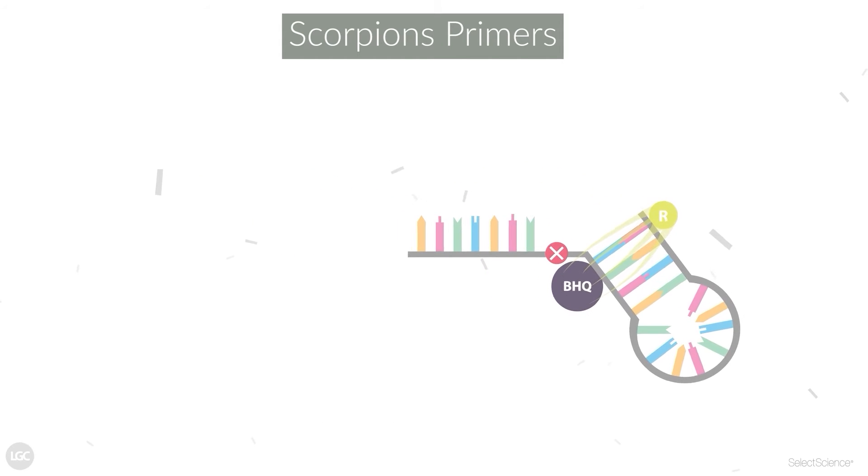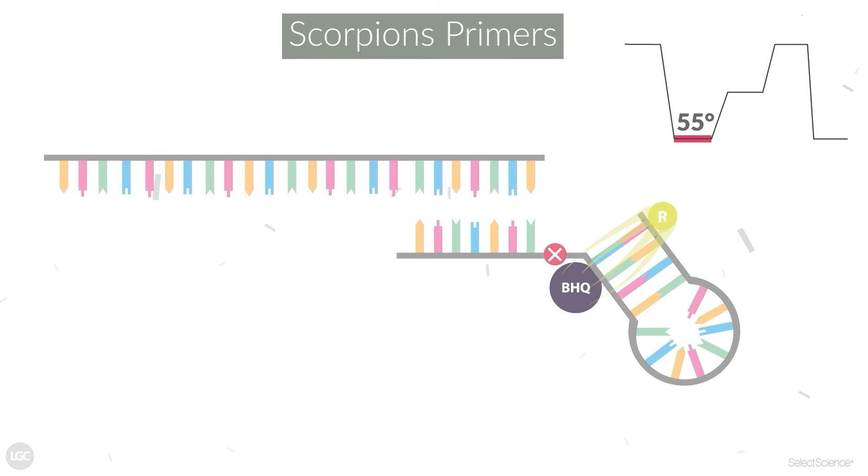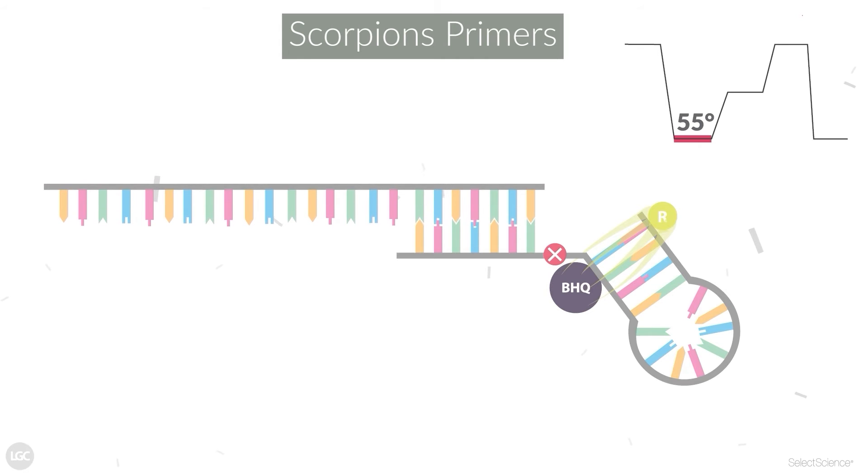Once the double-stranded target DNA is denatured, the temperature is lowered, which allows the target-specific primer to anneal to the target sequence.